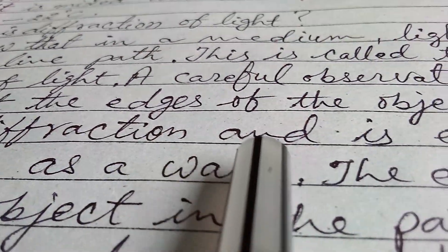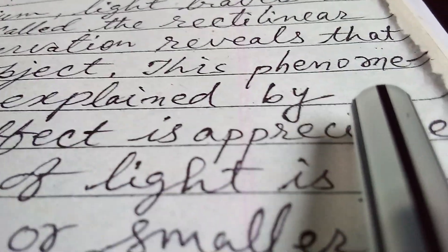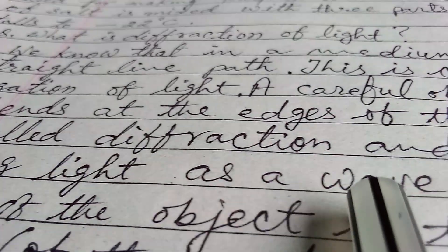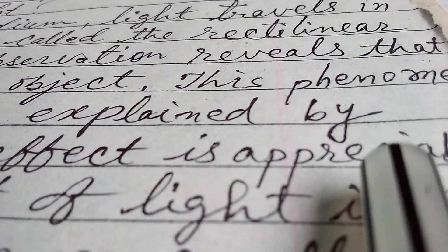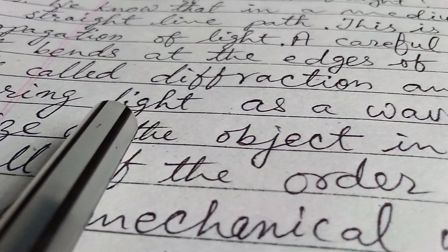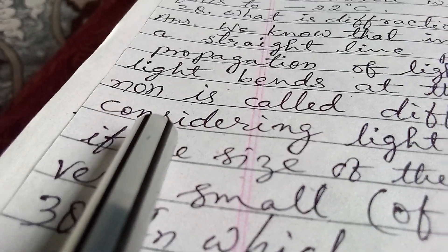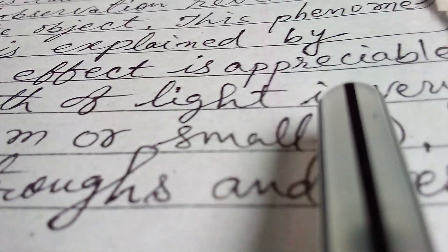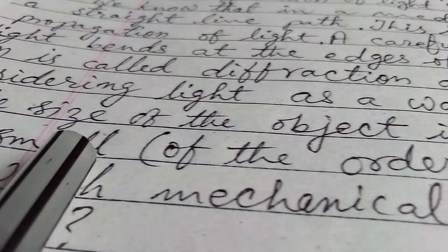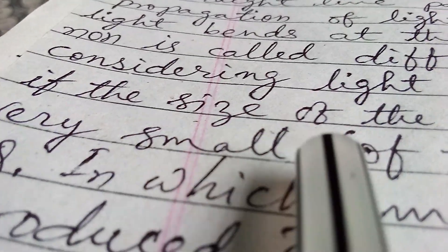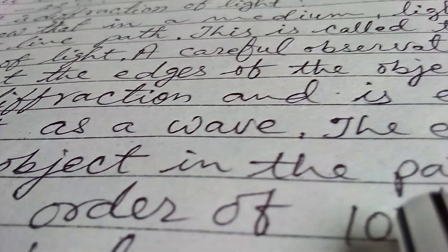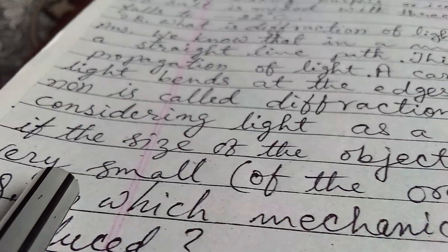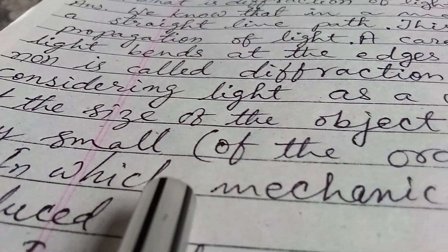This phenomenon is called diffraction and is explained by considering light as a wave. The effect is appreciable if the size of the object in the path of light is very small, of the order of 10 to the power minus 4 centimeter or smaller.